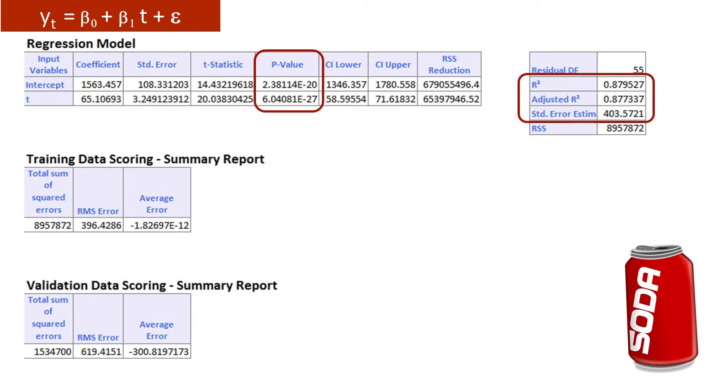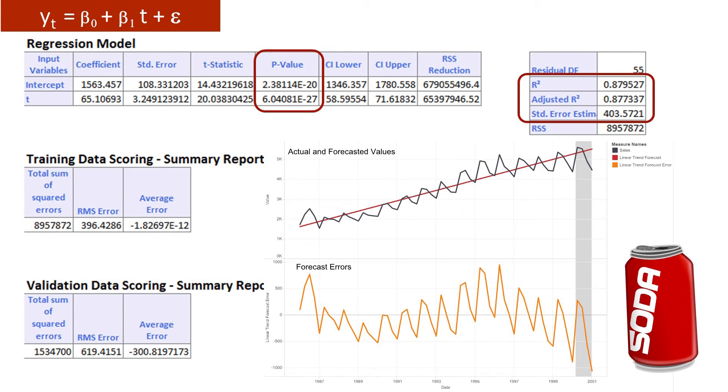Let's look at the performance charts. We immediately see that the linear trend model does not capture seasonality. Look at the seasonal behavior that remains in the forecast error chart. Also, we see that the trend is not properly captured. Toward the end of the series, the trend model is over forecasting, especially for some seasons.